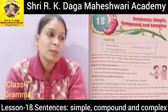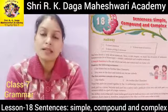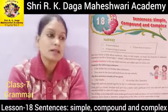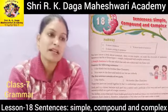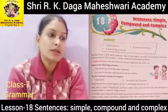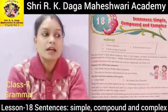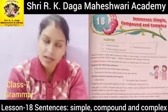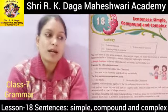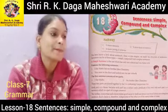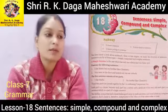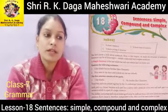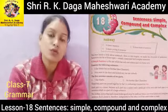Consider the sentence: 'I like maths but my mother likes chemistry.' This sentence has two parts. The first part is 'I like maths' and the second part is 'my mother likes chemistry.' These two parts are joined together by the coordinating conjunction 'but.'